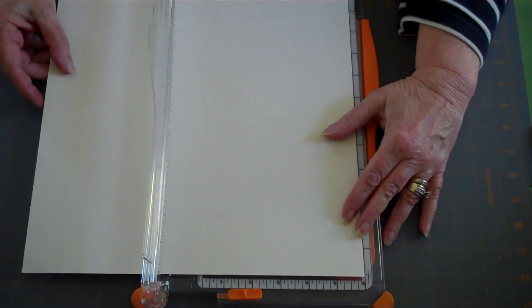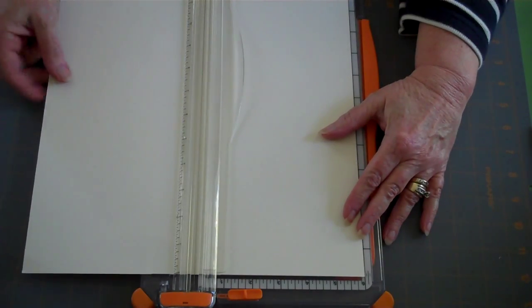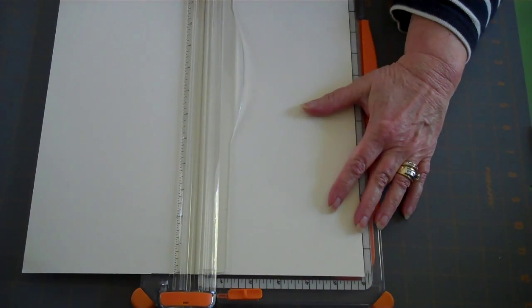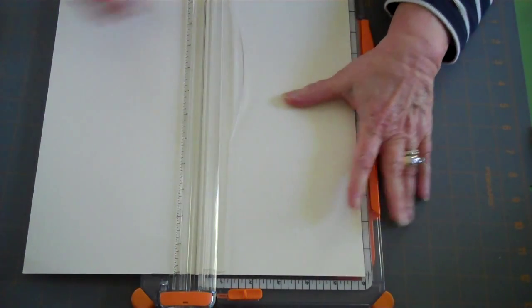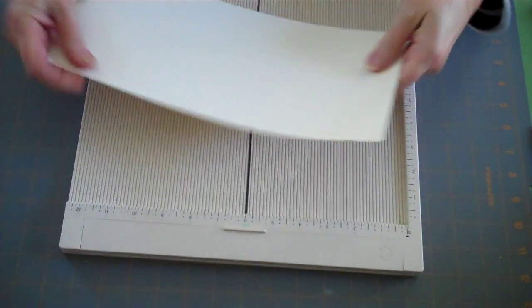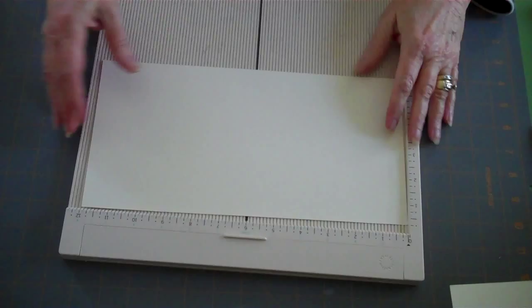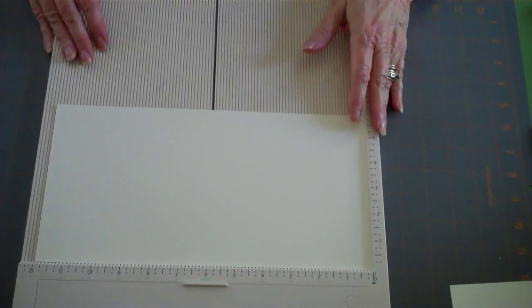So the first thing we're going to do is cut our 12 by 12 in half. So we've got two 6 by 12s. So really all it is is cutting, scoring, folding and then the book is done. We have to do one attachment, but then you can just mount photos or use mats. So first thing we're going to do, put one of your 6 by 12s in your scoreboard.